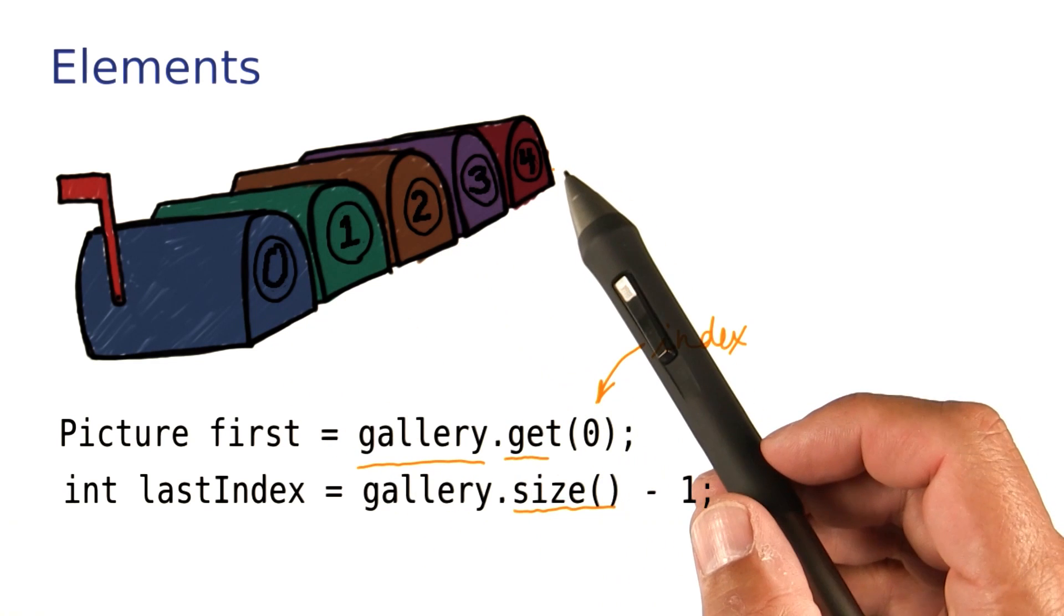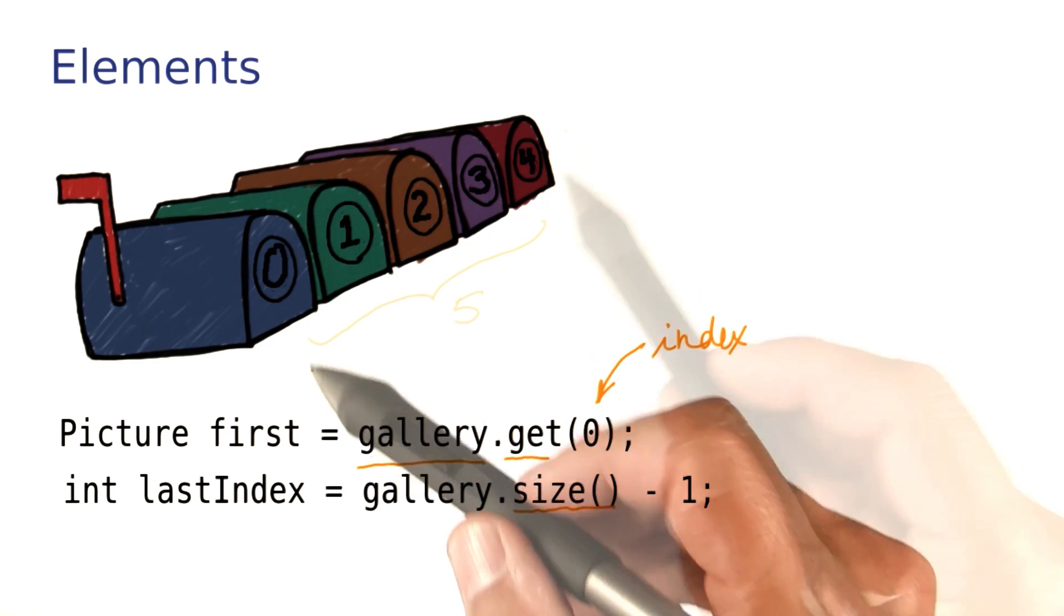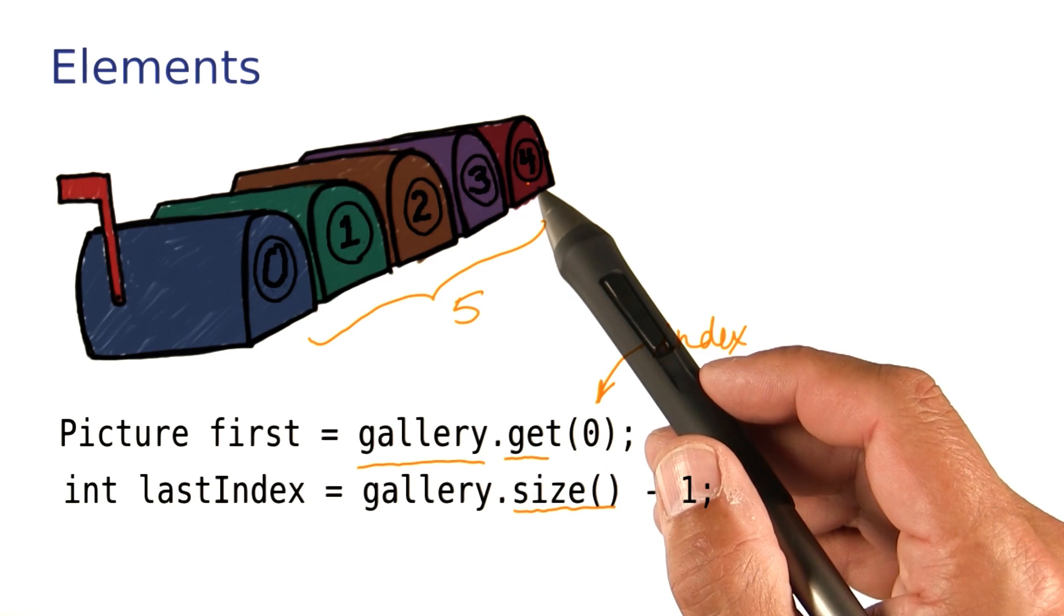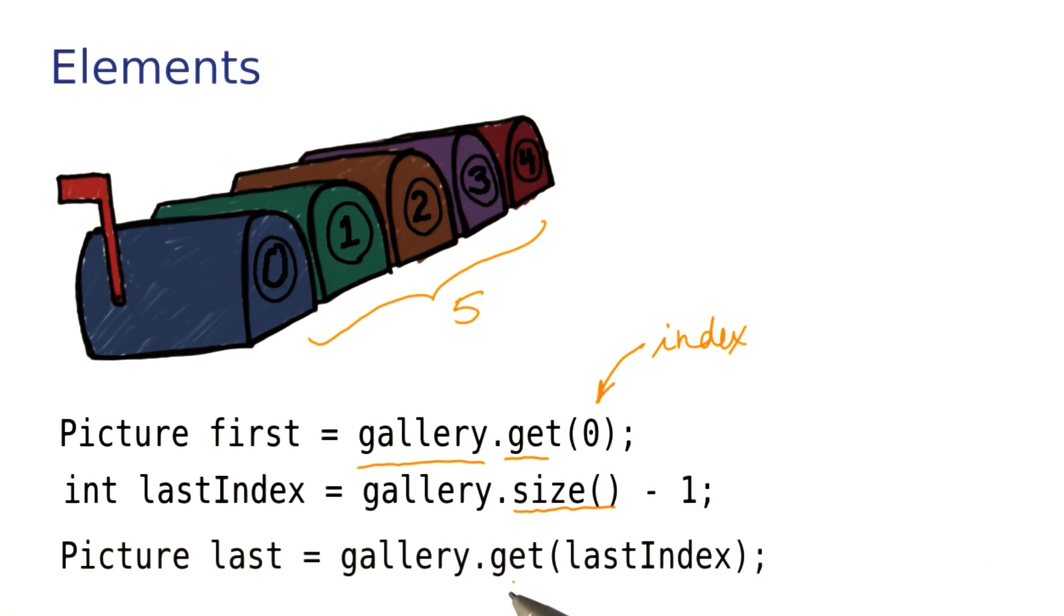Look over here. This list has length 5, and the last element has index 4. Now, once we have the last index, we can again use the get method, passing it the last index to get the last element out of here.